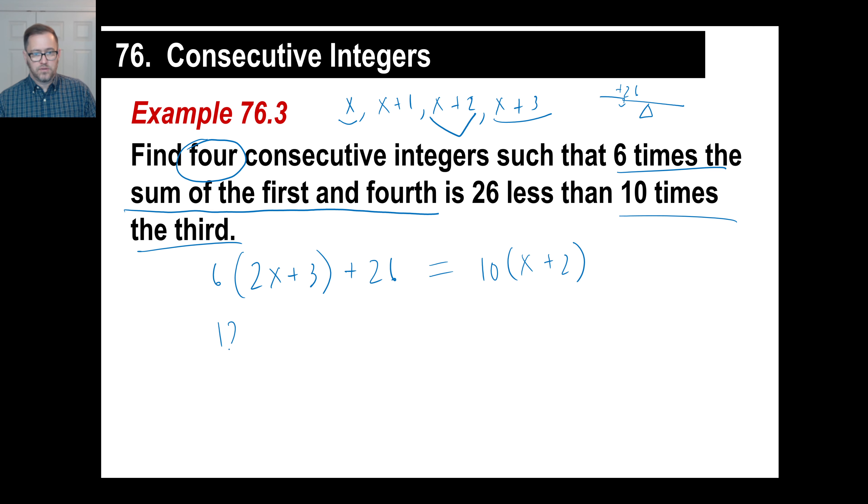Let's take a look. 6 times 2x, 12x. 6 times 3, 18. Plus 26. 10 times x is 10x. 10 times 2, 20. 12x plus 18 plus 26, that'll be 12x. 18 plus 26 is 44. 10x plus 20.